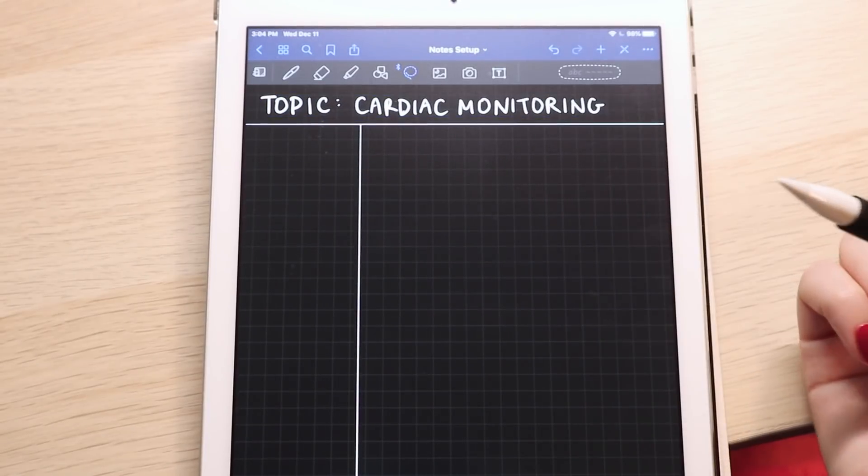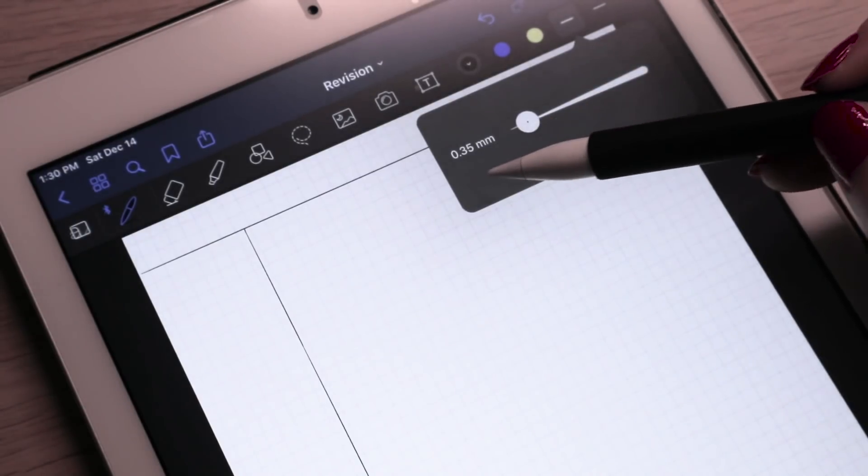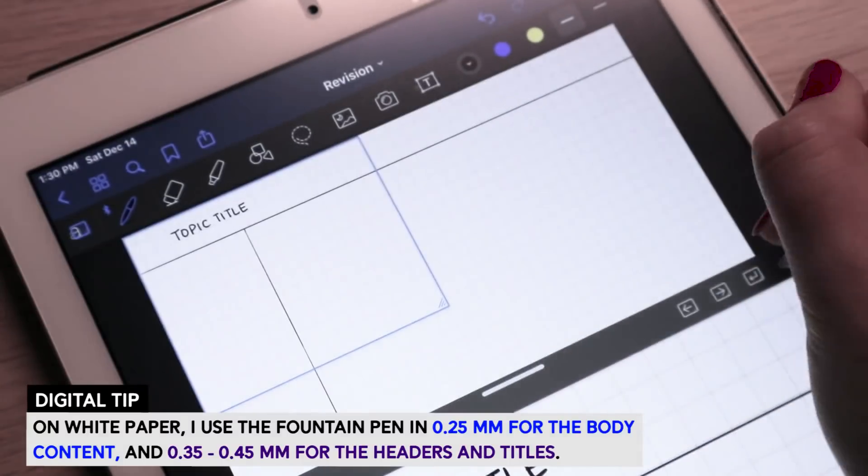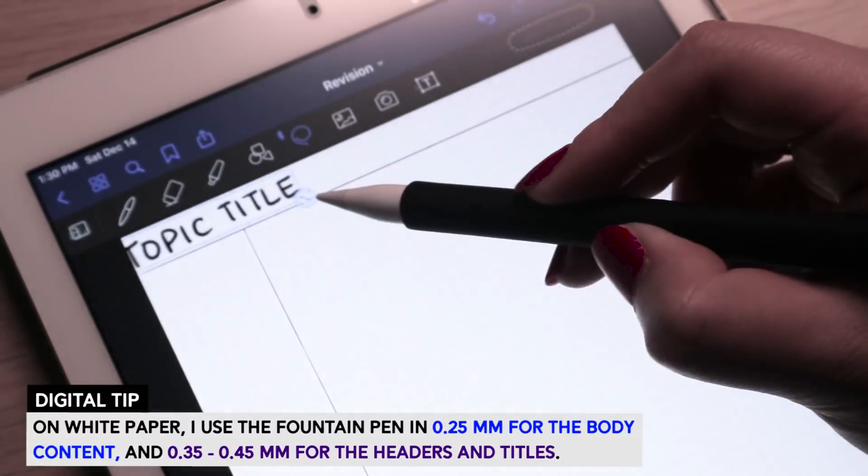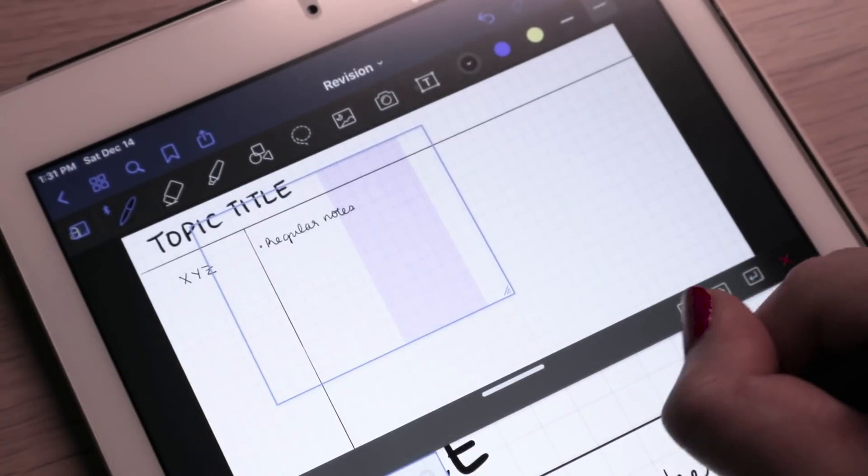So what I've noticed is that if you're using white paper as opposed to dark paper, you actually have to bring up your pen size by about 0.5 millimeters to get the same thickness. It's not the most noticeable difference, but it's definitely something to consider if you want to maintain that consistency.